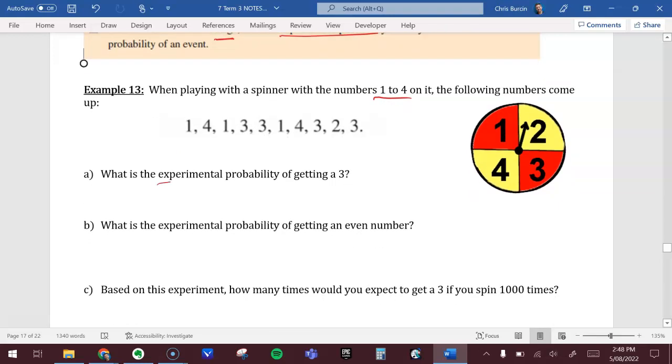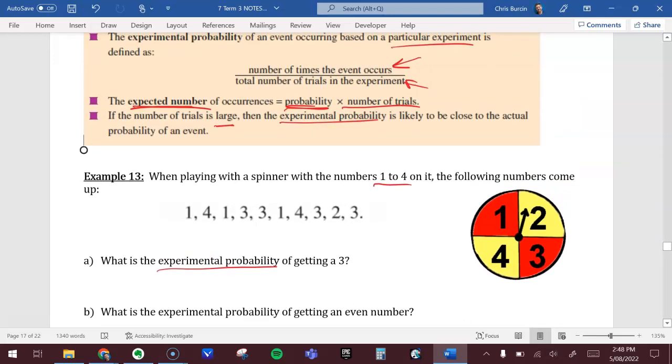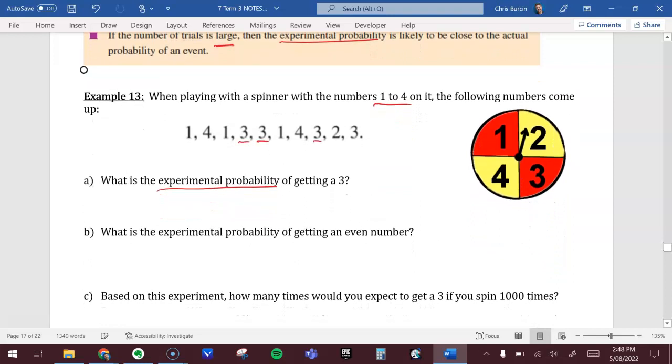This is experimental. What is the experimental probability of getting a three? We're going to look at the number of times the event occurs. How many threes do we get? One, two, three, four. So we get four threes.